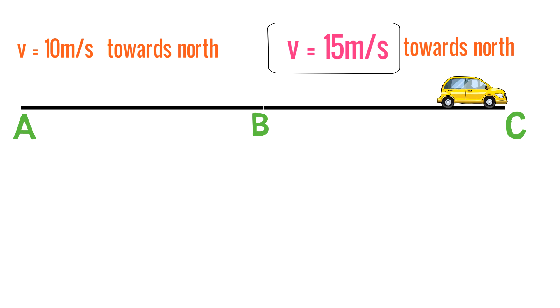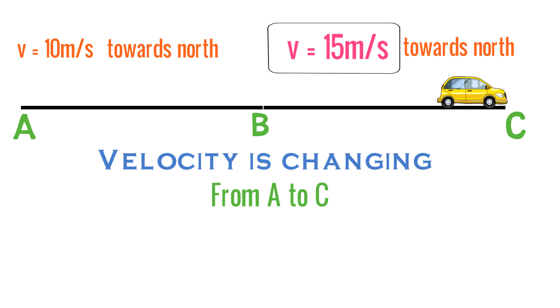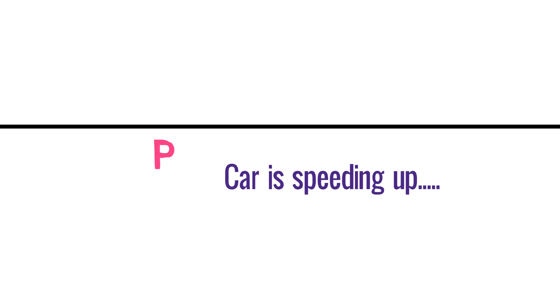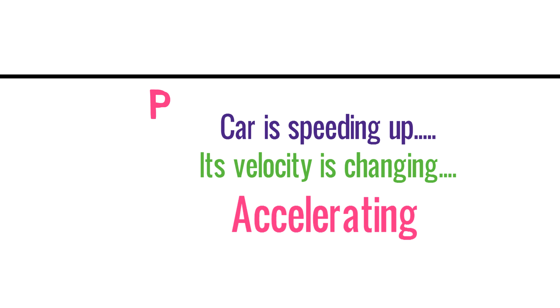Here the magnitude of velocity is changing from 10 meters per second to 15 meters per second, although the direction remains the same — towards north. So we can say the magnitude of velocity is changing, which means velocity is changing. From A to C, we can say velocity is changing, hence the car is accelerating. If a car is speeding up, we say its velocity is changing and the car is accelerating.